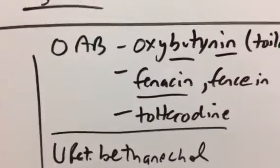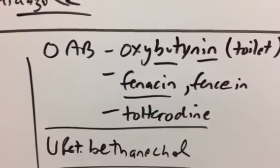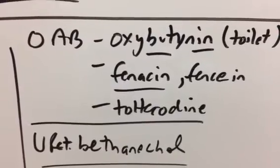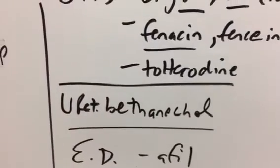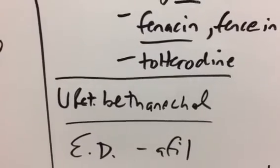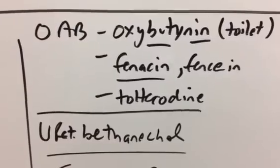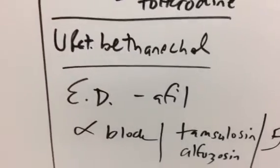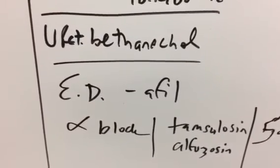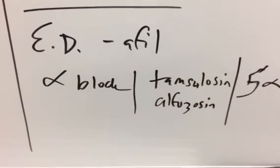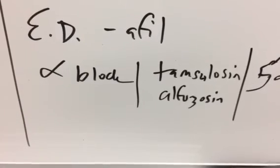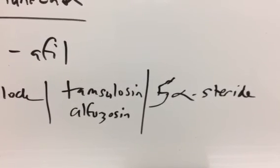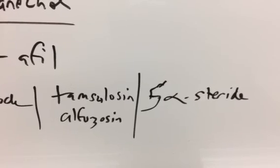The OAB, overactive bladder. So you can think you've got to get your butt in the toilet for oxybutynin. Fesoterodine, try to fence in the urine. And then tolterodine. You have urinary retention. So bethanechol is the one. And by keeping them next to each other, it's helpful. And you may be able to picture it in your brain. Then the ED drugs, like the vardenafil or sildenafil, which is Viagra, that uphil stem. And then the alpha blockers, which don't really have that vasodilatory effect that are specifically for BPH, the tamsulosin and alfuzosin. And then the 5-alpha reductase inhibitor, finasteride, dutasteride, those both for BPH as well.